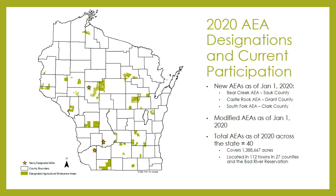This year, the state designated three new AEAs covering approximately 73,000 acres in Sauk, Grant, and Clark counties. In total, there are 40 different AEAs covering approximately 1.4 million acres across Wisconsin. These AEAs are in 112 different towns in 27 different counties and the Bad River Reservation.